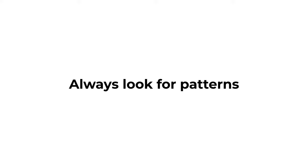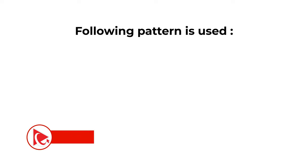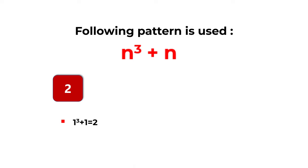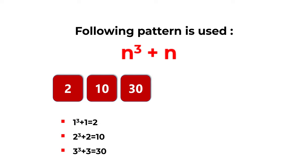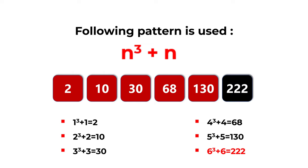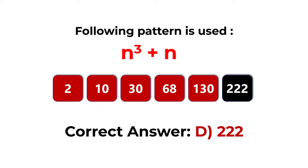Look for patterns. The formula here is n³ + n. So: 1³+1=2, 2³+2=10, 3³+3=30, 4³+4=68, 5³+5=130, and the missing number is 6³+6 = 216+6 = 222. The correct answer is choice D: 222.